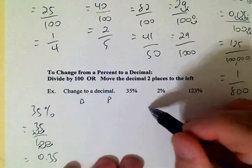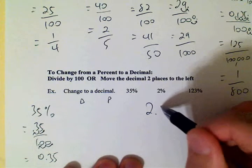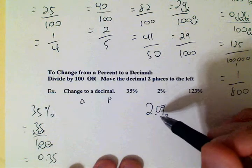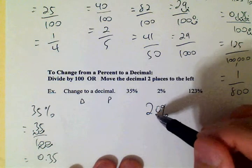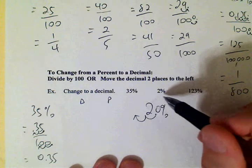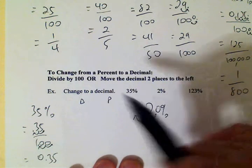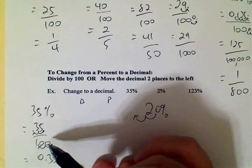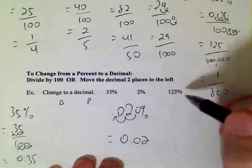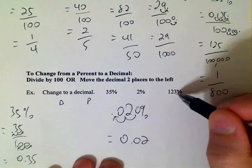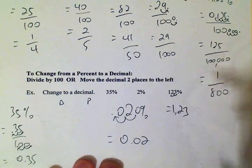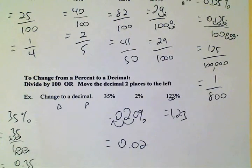So two percent — the same as two point O. Convert it to a decimal: you move it to the left two places. Two places, because percent is per one hundred, and a hundred has two zeros in it. Here's your decimal — let's go two places to the left. That equals one point two three. And that's how you do those problems.